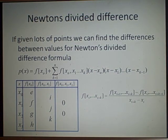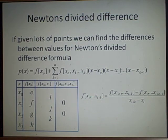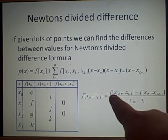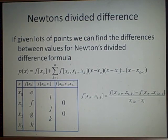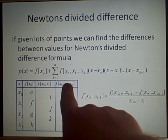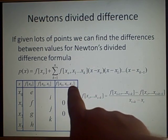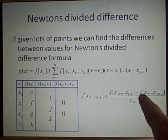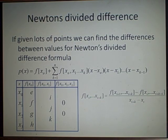To compute the divided differences, f[x_i, ..., x_{i+k}] equals f[x_{i+1}, ..., x_{i+k}] minus f[x_i, ..., x_{i+k-1}], all divided by x_{i+k} minus x_i. So if you wanted f[x0, x1, x2], you'd compute f[x1, x2] minus f[x0, x1], divided by x2 minus x0.